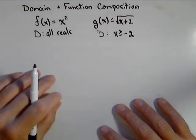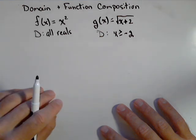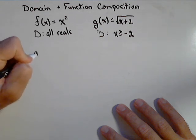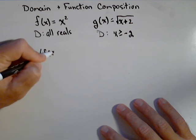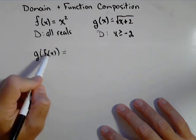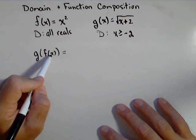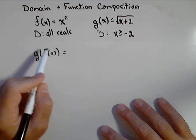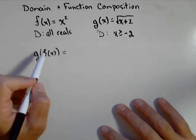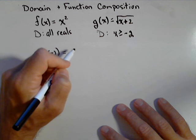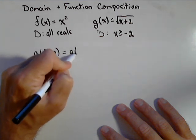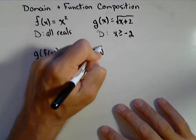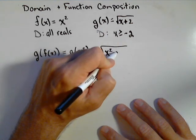Now depending on the direction we compose these, we might have different domain issues we have to think about. So first, let's do g of f of x. Now we know for f that the domain is all reals, but we're gonna need to check the domain of the composition of the two to be sure that it remains all reals, because it might not. So that means I'm putting in x squared as my input into g. So g of x squared. And putting the x squared in for x gives me square root of x squared plus two.